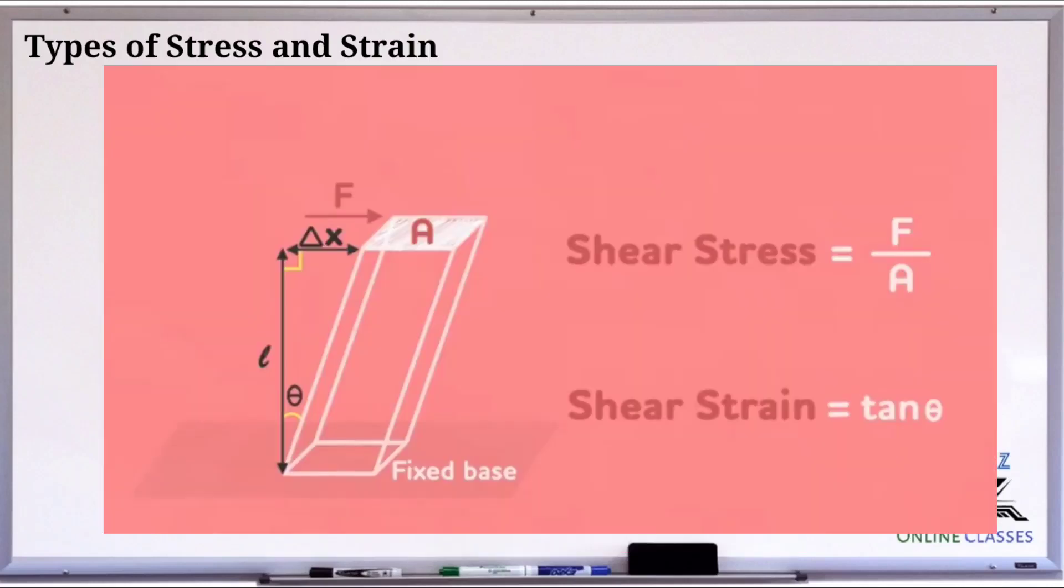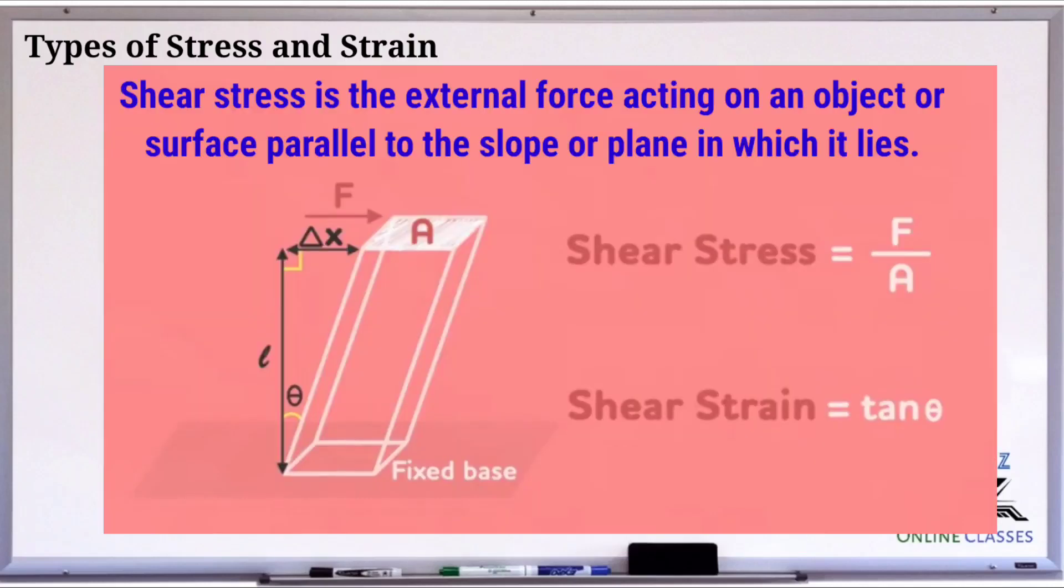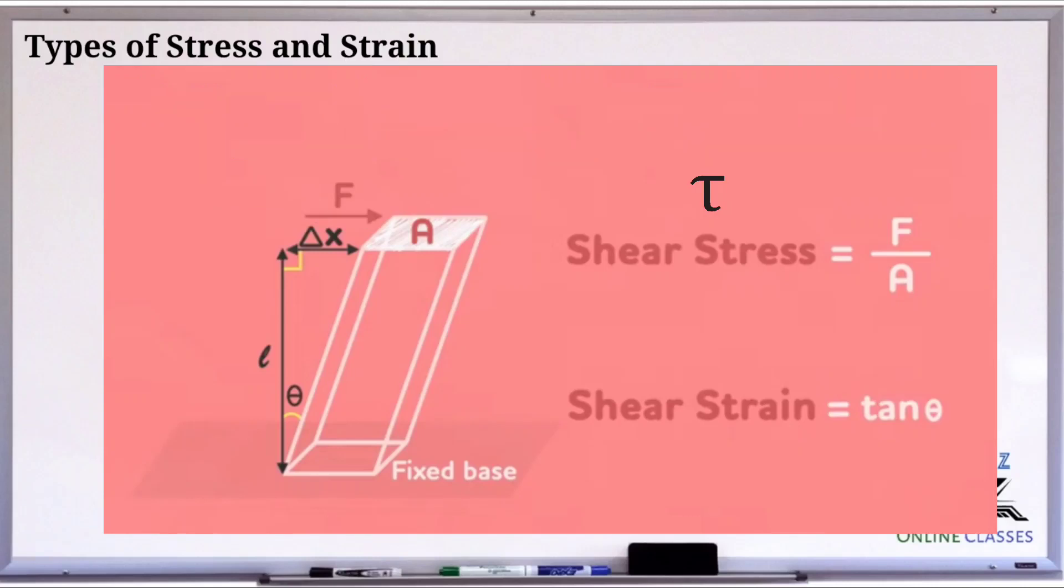The other type is shear stress. Shear stress is from the force vector component parallel to the cross-section of the material. Shear stress is denoted as tau. Shear stress equals shearing force over area. Then shear stress has a corresponding shear strain, denoted as gamma. Shear strain is equal to tangent of displacement angle.